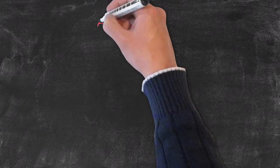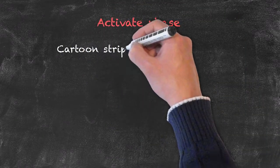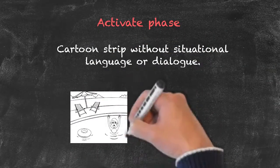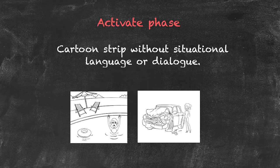For the final stage in the activate, what we're going to then do is put those two ideas from the study phase together. We're going to give them a cartoon strip which has neither the situational description of the language or any dialogue in the speech bubbles, and the students are going to have to fill in both of those bits of information.